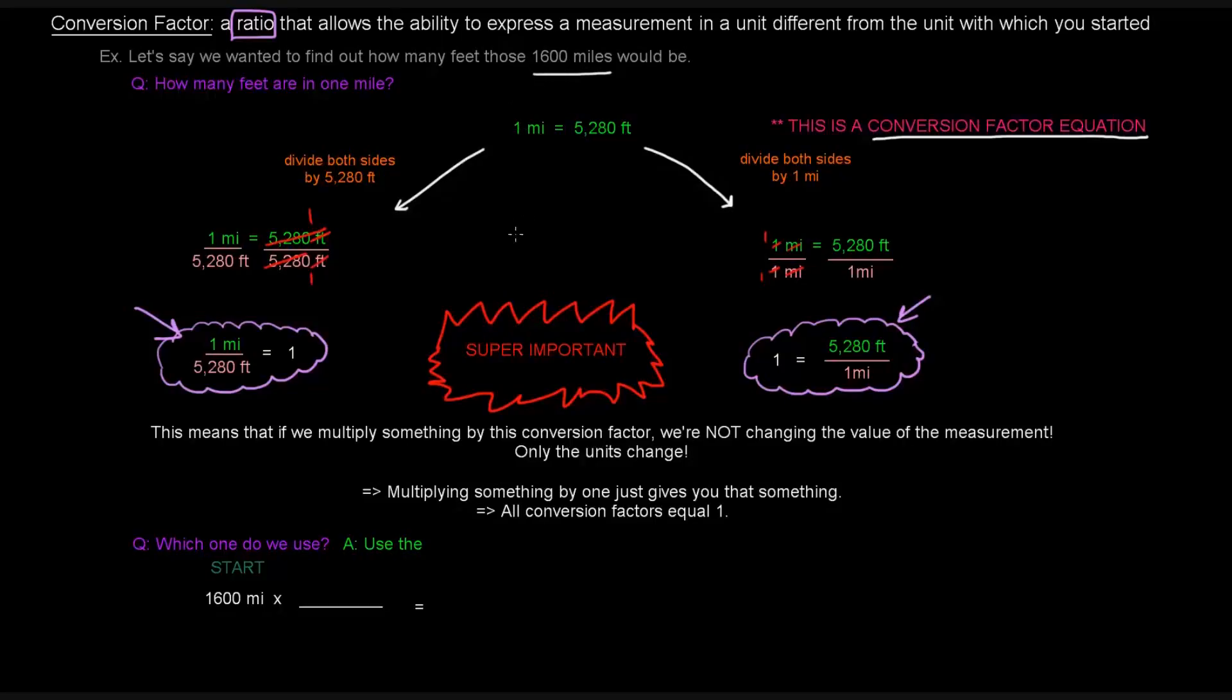The whole reason we started talking about this is we wanted to find out how many feet those 1600 miles were. So I know I'm going to use one of these conversion factors, but which one? You're going to use the one that can cancel the unit that you start with. We're starting with 1600 miles. I want to convert these to feet. I'll call this A and B. I want to use the one that'll cancel the miles, so it has the miles in the denominator. I'm going to use B.